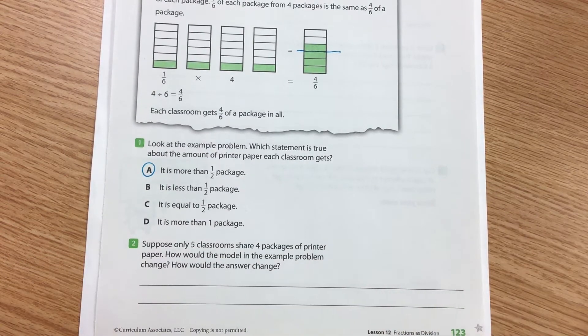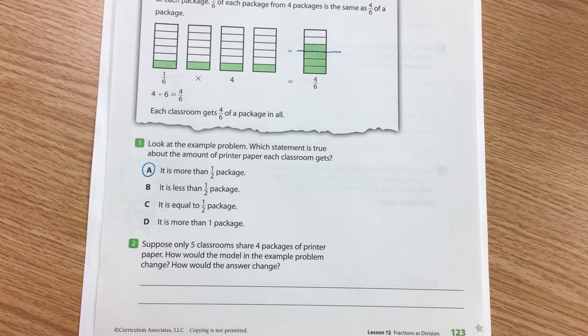Number two says suppose only five classrooms share four packages of printer paper. How would the model in the example problem change? How would the answer change?